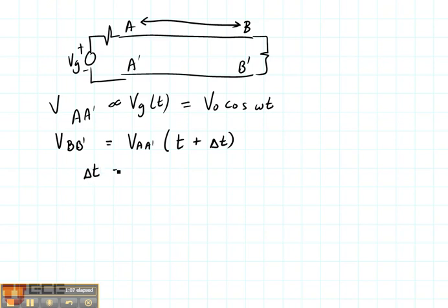Delta T is going to be a time delay in seconds. So that's going to be our length in meters divided by the velocity of propagation. So this is meters divided by meters per second. That's going to give us seconds. So the length divided by velocity of propagation, and that's what goes right here.